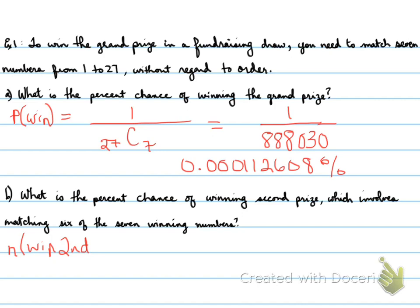Now, part B is, what is the percent chance of winning second prize, which involves matching 6 of the 7 winning numbers? To win second, that means that you would have to actually have, from the 7 winning numbers, we've chosen 6 of them. And we have 1 extra number from the remaining 20 that are left over. So, 7 choose 6 times 20 choose 1 over 27 choose 7.